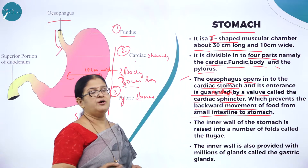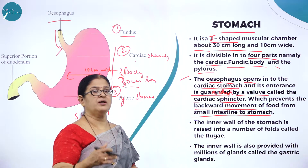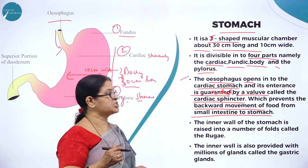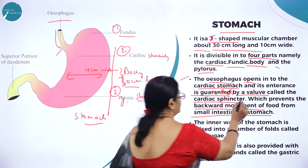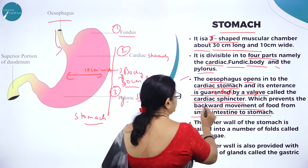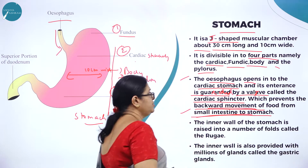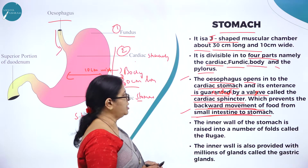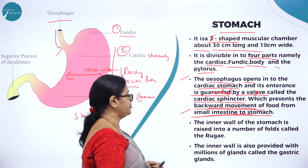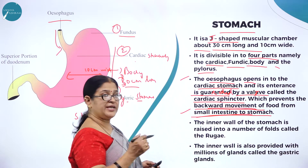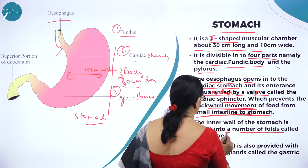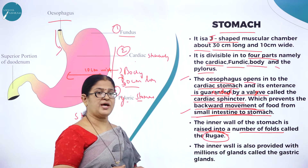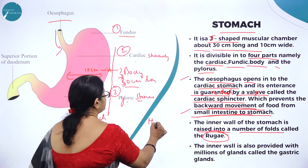The flow of food is unidirectional — from the esophagus it goes to the stomach, and from the stomach to the small intestine. It will not go back from the small intestine to the stomach. So the cardiac sphincter, which is a wall-like structure, prevents the backward movement of food. The inner wall of the stomach is raised into a number of folds called rugae. The inner wall also has gastric glands which produce a very important acid called HCl.